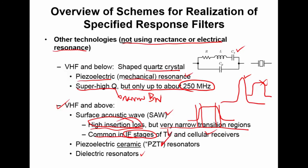PZT is a type of piezoelectric ceramic material that works basically like a crystal. The third approach is the dielectric resonator, which, as the name implies, uses a dielectric material in a cavity to achieve resonance. These are techniques that show up at VHF and above. This is certainly not an exhaustive list, but just a taste of the different filter implementation possibilities.